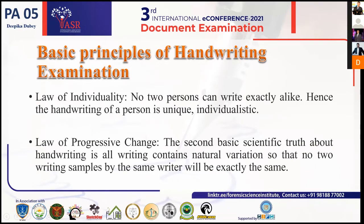Forensic handwriting examination is basically done on the basis of two principles. First is the law of individuality, which explains that no two persons can write exactly alike — hence the handwriting of a person is unique and defines individuality. Second is the law of progressive change, which defines that the handwriting of a person changes with the passage of time.